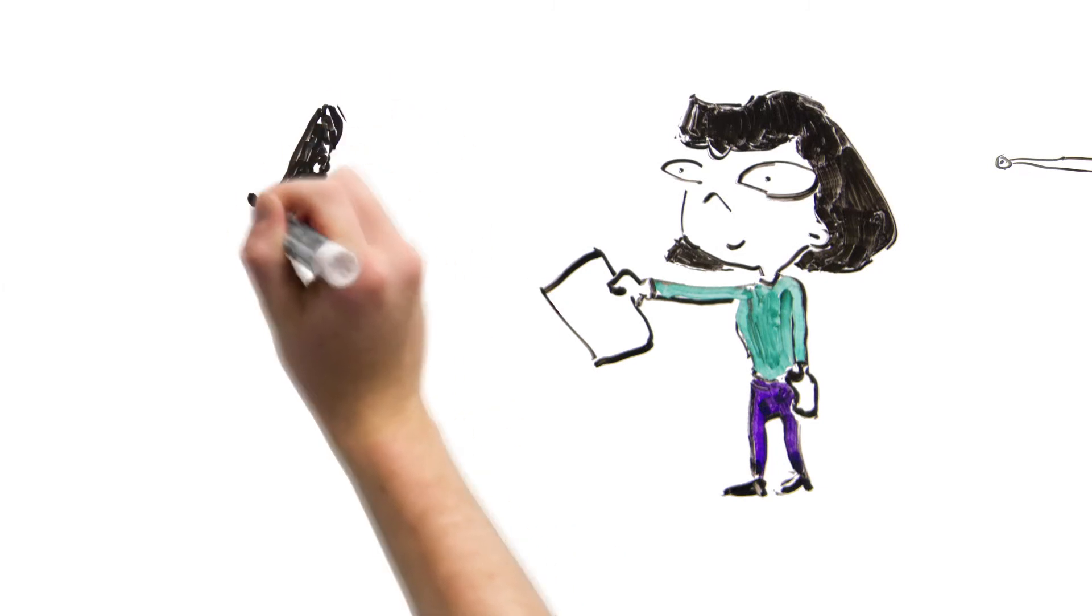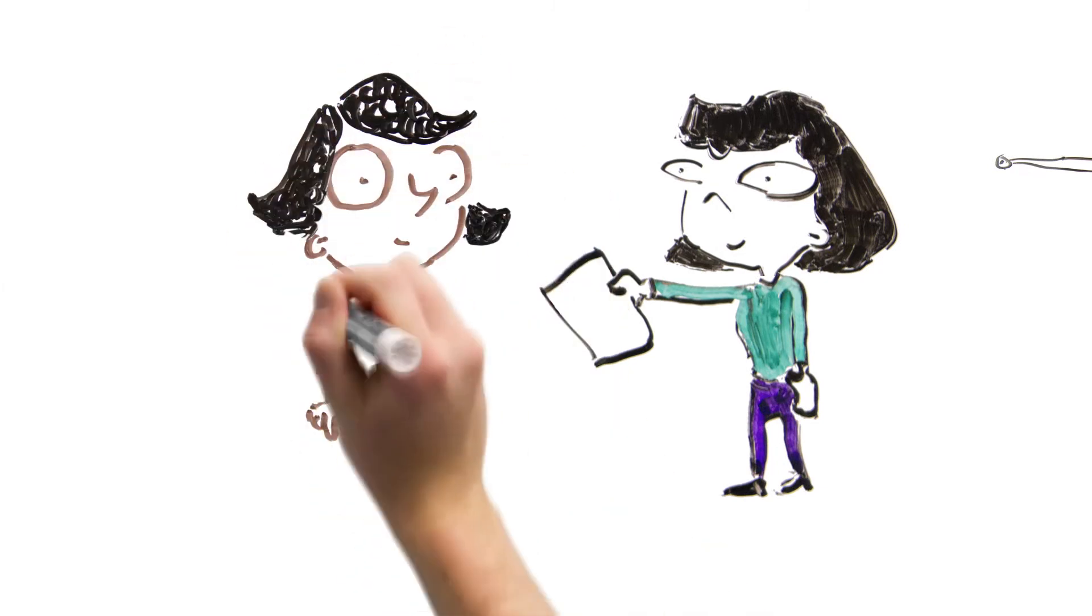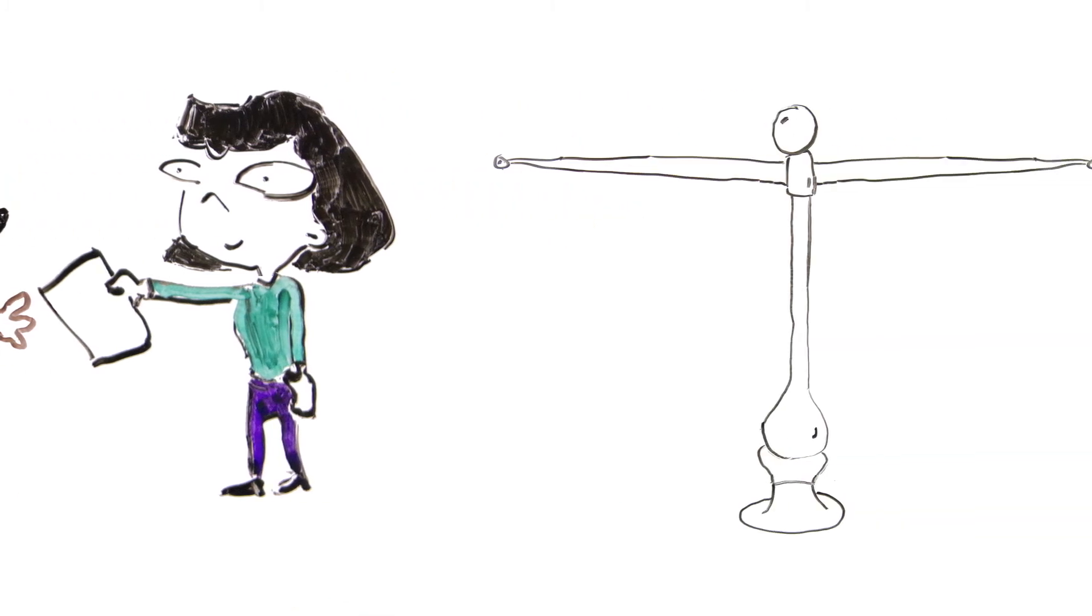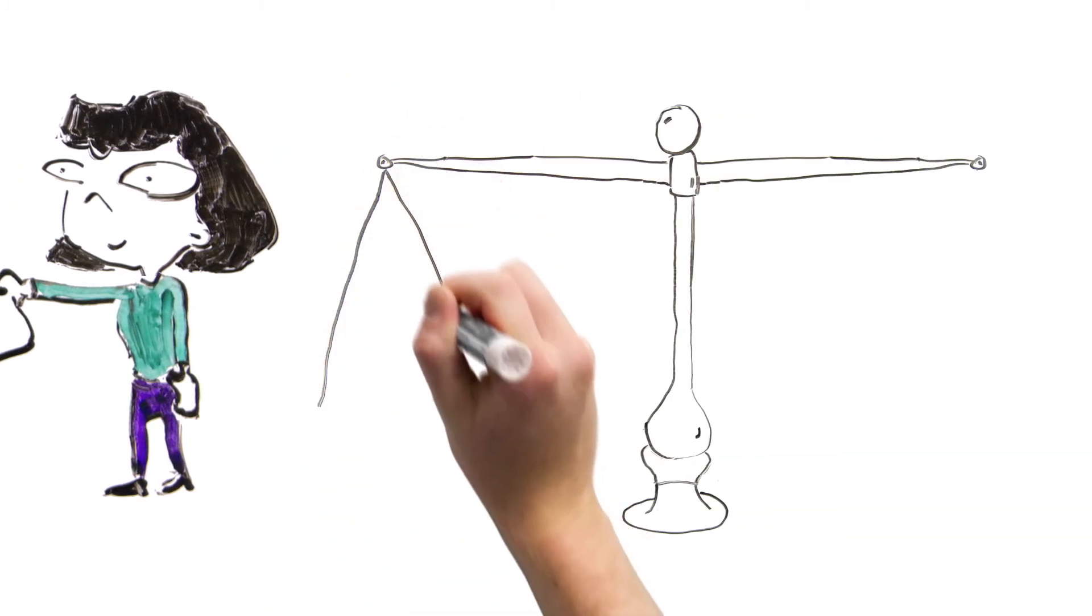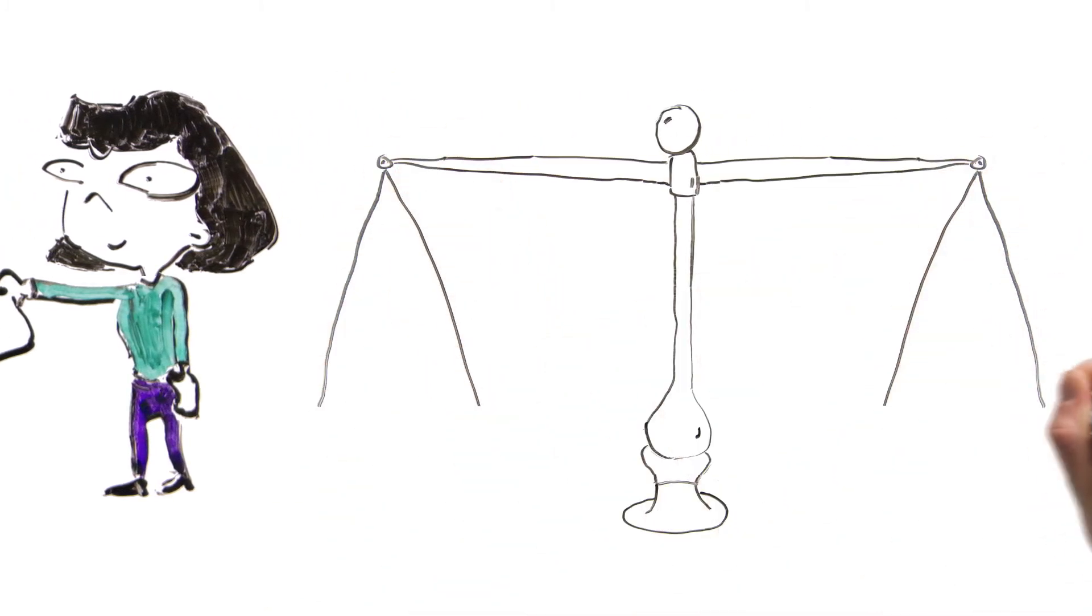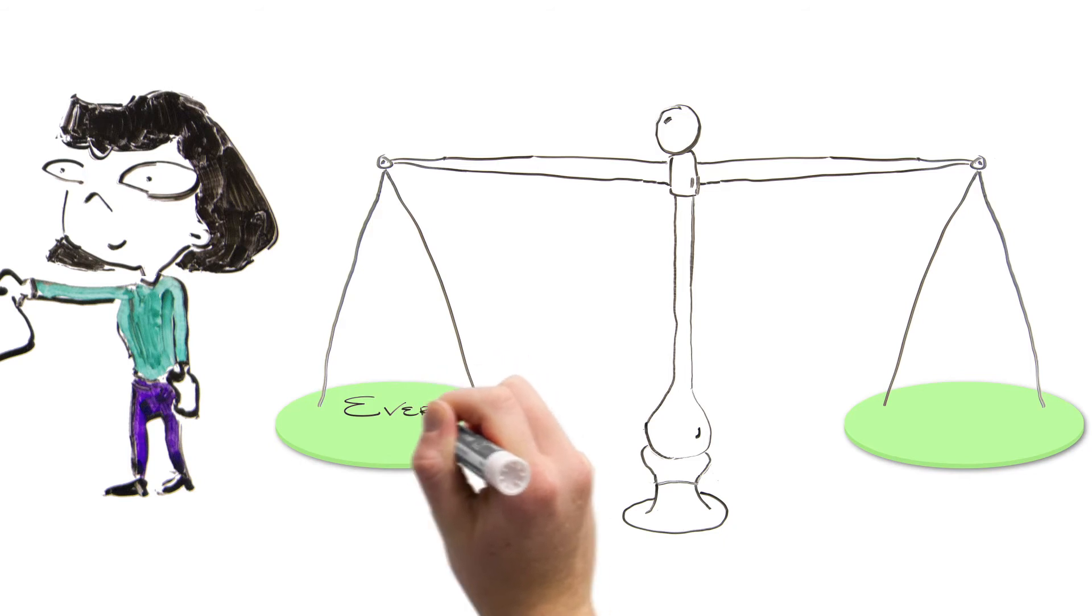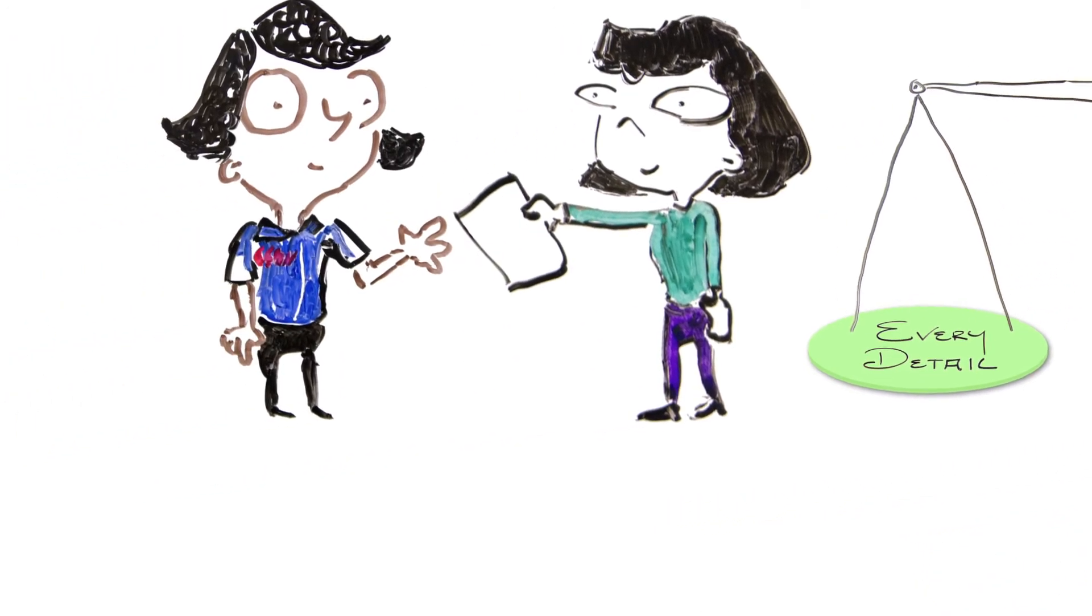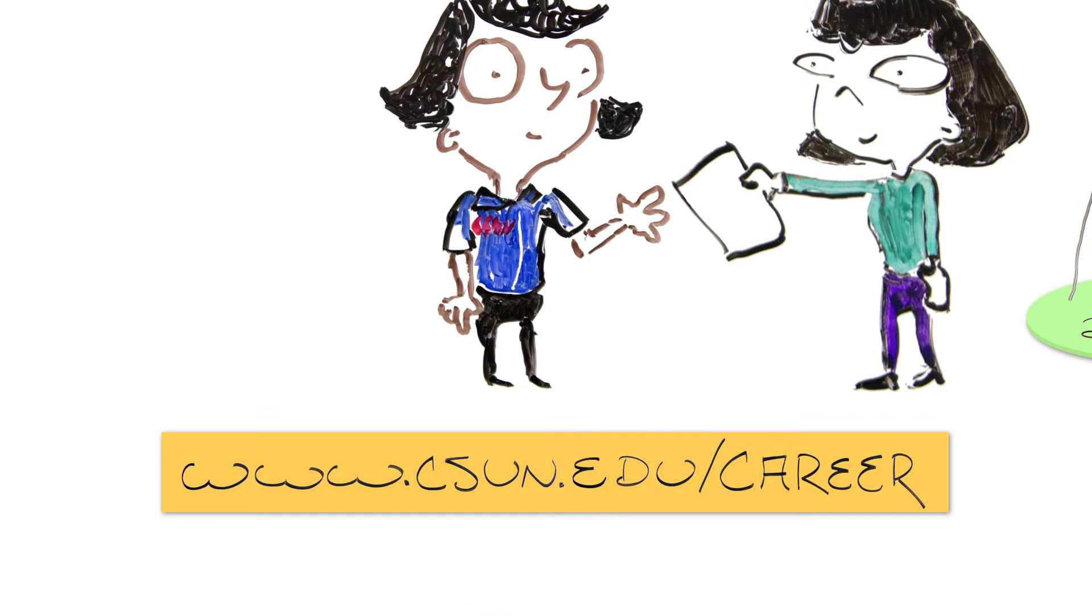Like the personal statement, tailor your resume for each fellowship or research opportunity application. Find the balance between including every detail and only including what's necessary to make you appear well-rounded. Create categories to separate your experiences. By doing so, your resume will be organized and clutter-free. Check out the Career Center's resume guide at www.csun.edu/career.